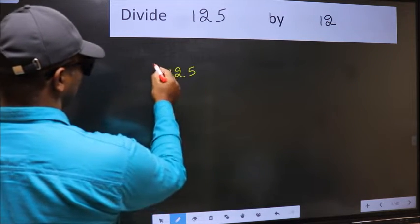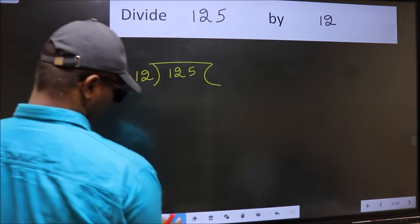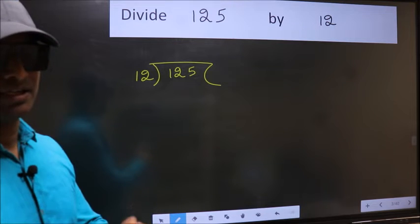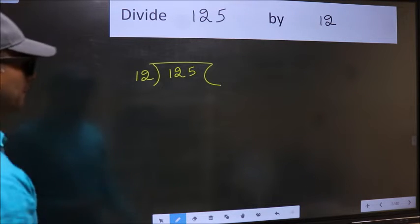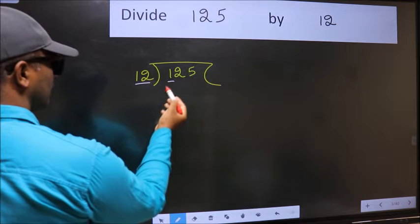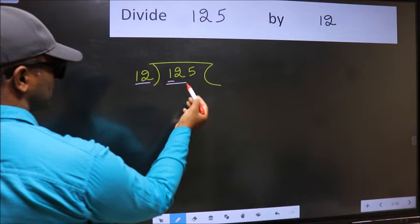125 and 12 here. This is your step 1. Next. Here we have 1 and here 12. 1 is smaller than 12, so we should take 2 numbers: 12.